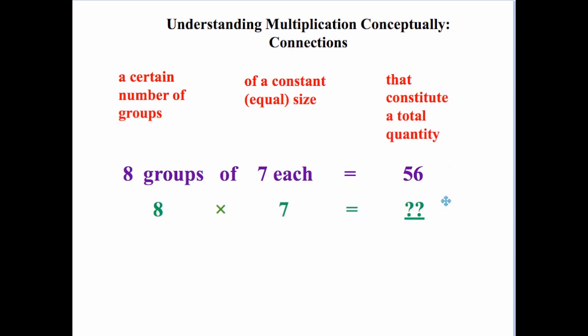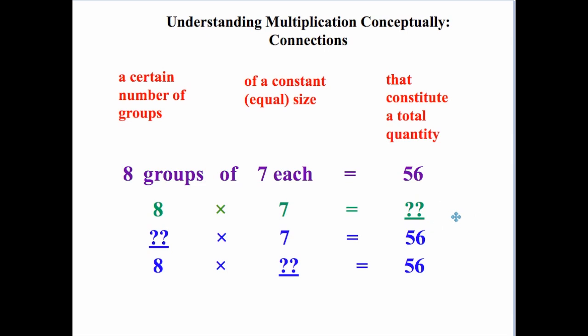At this stage, this would be considered a multiplication problem: eight times seven equals what? And then, these next two situations in the blue font would be considered division contexts. In this case, the first one, we know the total is 56. We know that we want the size of the sets to be seven. We're looking for the number of groups that would constitute. Over here, we have a total of 56, and we know we have a certain number of groups, in this case eight. So we want to know what would the size of the groups need to be.